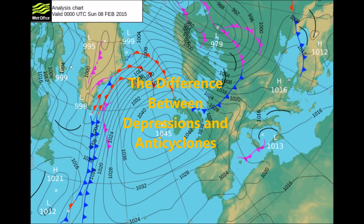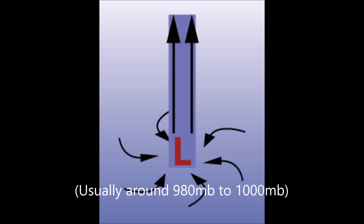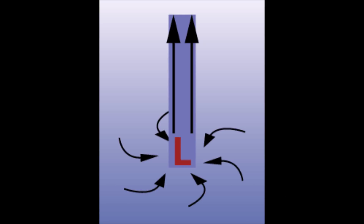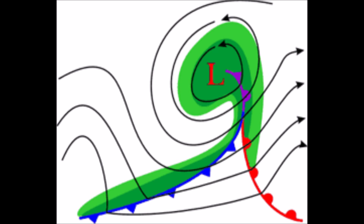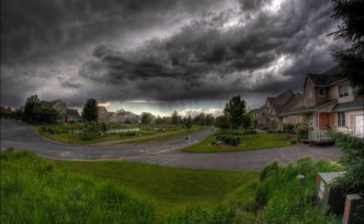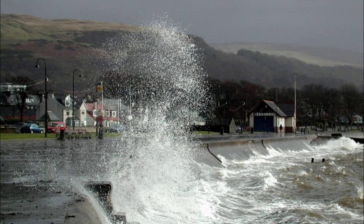The difference between depressions and anticyclones: a depression is an area of low atmospheric pressure associated with many different types of weather. Depressions bring cloudy, rainy and stormy weather with high winds. This is because the low pressure is caused by rising air, which takes moisture from the surface that then condenses and forms clouds.